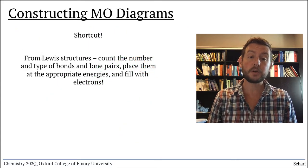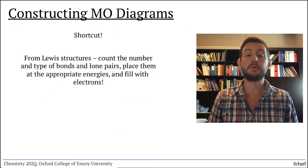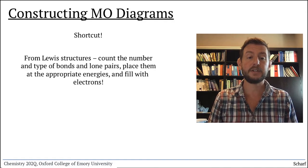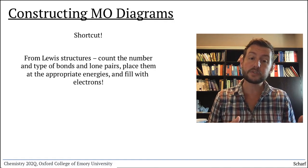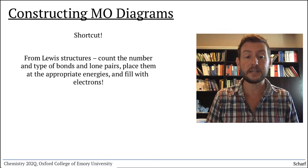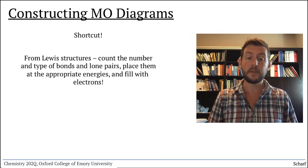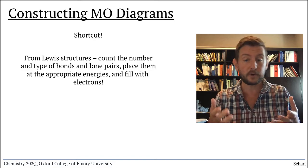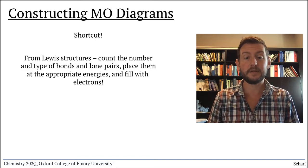There's a fun shortcut available once you're comfortable building MO diagrams from scratch. If you know a Lewis structure, you can simply count up the numbers and types of bonds and lone pairs and place them at the appropriate energies, and finally fill with electrons. That's the topic of the next video.